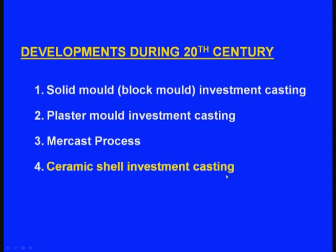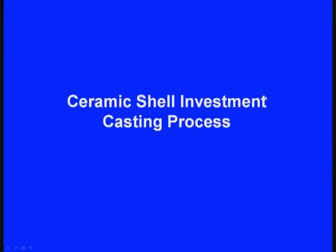In the ceramic shell investment casting process, we initially make the pattern, most of the times made up of wax. This wax pattern is dipped in a ceramic slurry, taken out, and a stucco coating is given around it. After the stucco coating dries, it is dipped inside the ceramic slurry again. This cycle is repeated about 5 to 7 times, and finally a shell is created around the wax pattern.